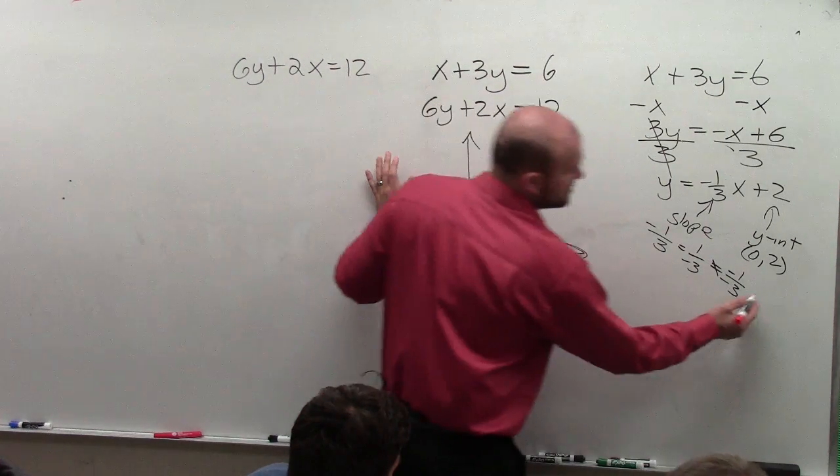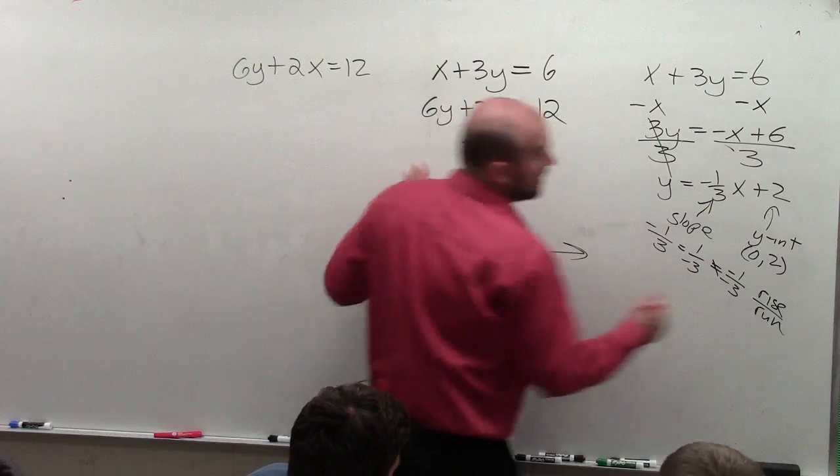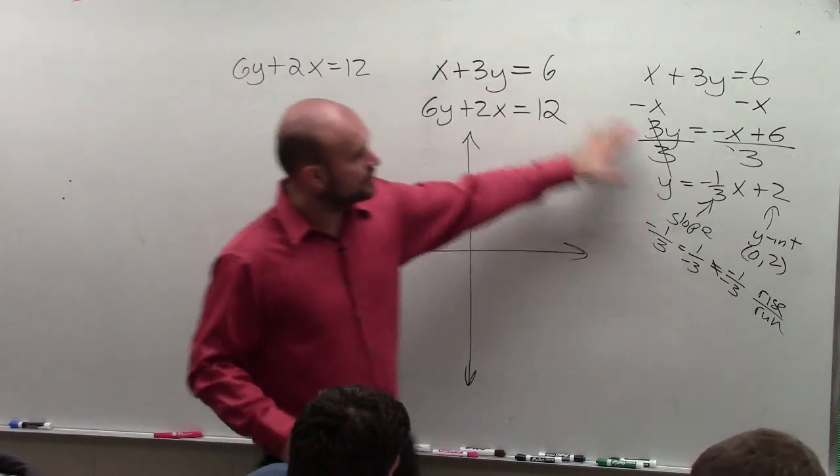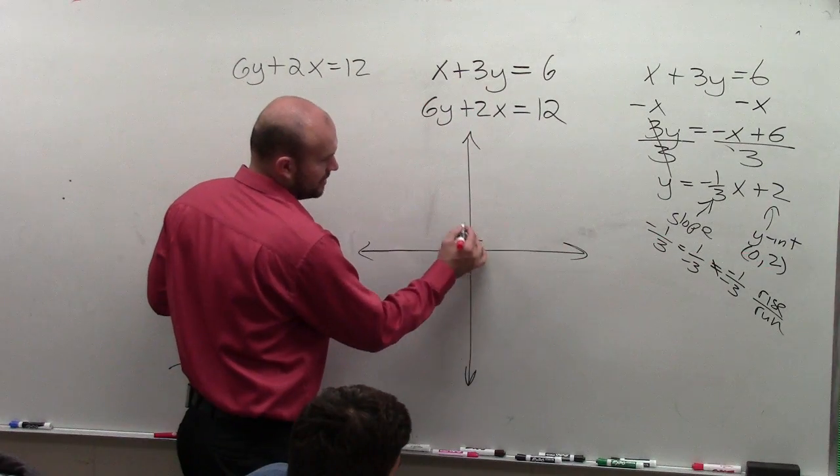And remember, slope, a lot of times, we think about it as rise over run, right? The change in the y-coordinates over the change in the x-coordinates. So to graph this, I go to my y-intercept, which is at 0, 2.